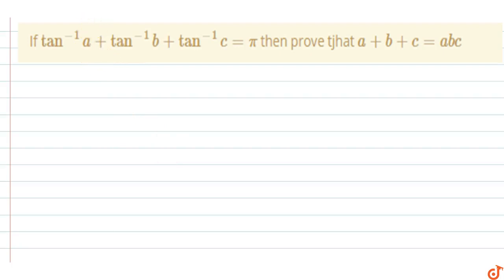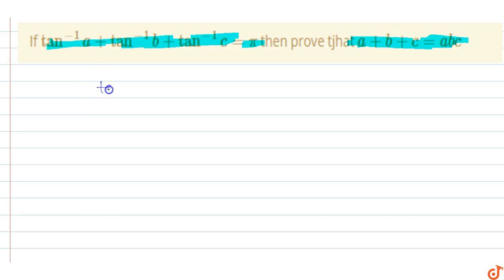If tan inverse a plus tan inverse b plus tan inverse c equals pi, then prove that a plus b plus c equals abc. So given that tan inverse a plus tan inverse b plus tan inverse c equals pi.